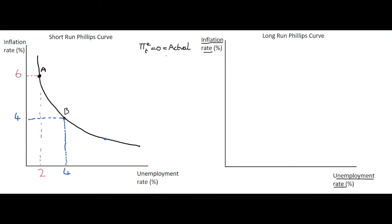We're also going to introduce the concept of the natural rate of unemployment, where the natural rate of unemployment is equal to the actual rate of unemployment. The natural rate of unemployment is the non-accelerating inflation rate of unemployment, sometimes referred to as NAIRU — the rate at which the economy is growing at its potential level.